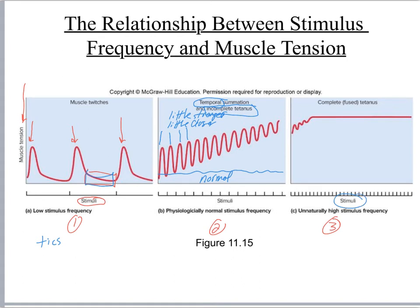In graph three, you see the beginning of a signal and then a flat line sustained way up at maximum — a muscle spasm that will not end. This is considered complete or fused tetany, which only occurs in laboratory conditions.